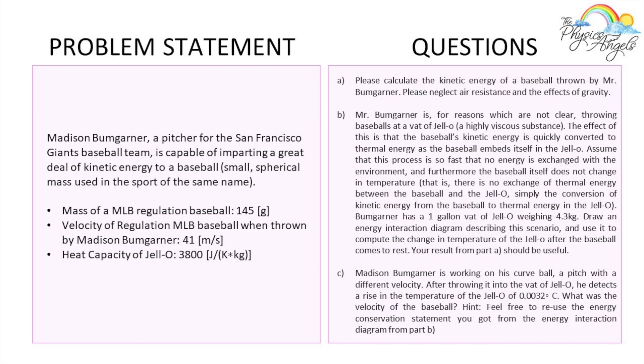Part B says he throws the baseball at some jello. So it starts at a certain velocity, 41 meters per second, and then the jello stops it. Because the jello is stopping the baseball, it gets a little heated up. We have to draw an energy interaction diagram describing the scenario and figure out the change in temperature of the jello after the baseball comes to rest.